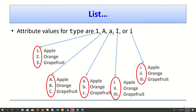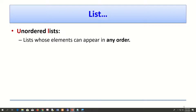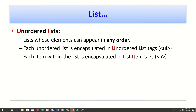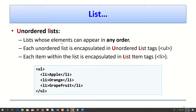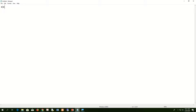Next is the unordered list. In an unordered list, elements can appear in any order — there is no specific order. The unordered list uses the tag UL — U from unordered, L from list. Inside the UL tag we also use the LI list item tag to insert items, just like with the ordered list.